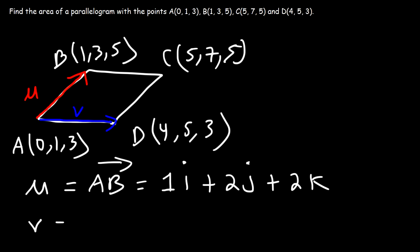Now let's do the same for vector v, which is the same as vector AD. So going from 0 to 4, that's an increase of 4. And then 5 minus 1 is also 4, so this is going to give us 4j. And 3 minus 3 is 0, so we're going to have 0k, or you could just put nothing there.